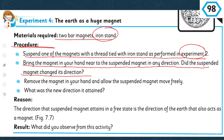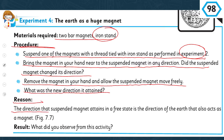Did the suspended magnet change its direction? Remove the magnet in your hand and allow the suspended magnet to move freely. What was the new direction it attained? The direction the suspended magnet attained in a free state is the direction of the Earth — which also acts as a magnet.